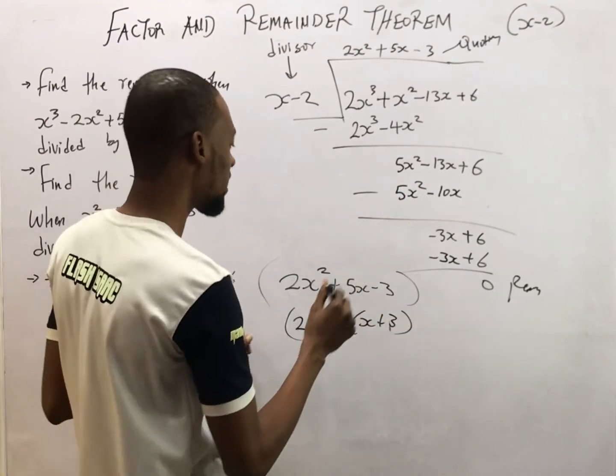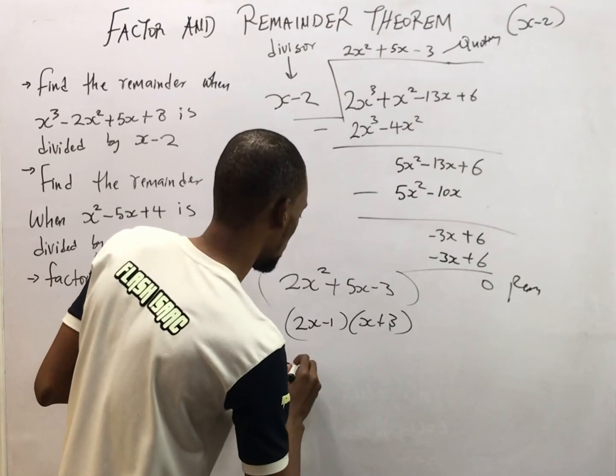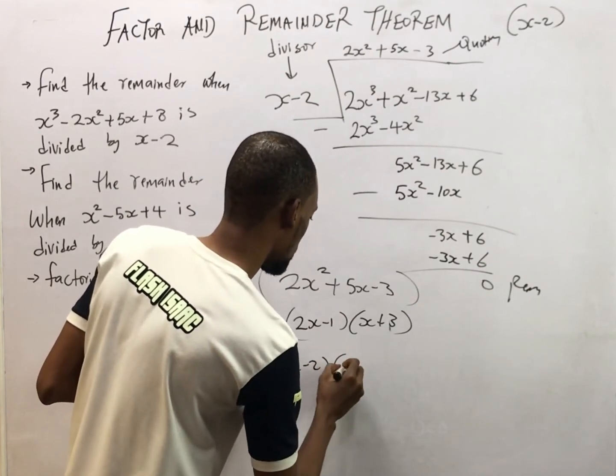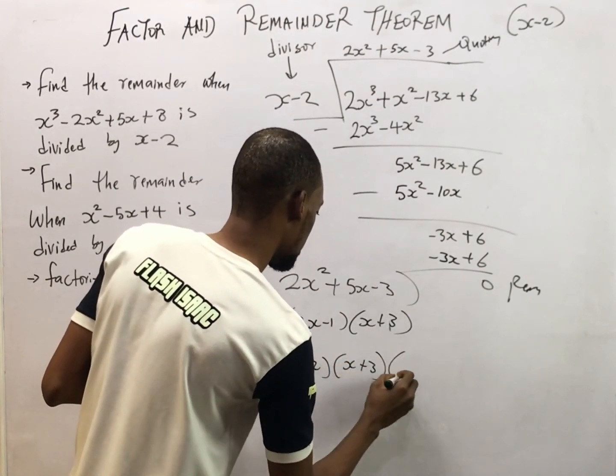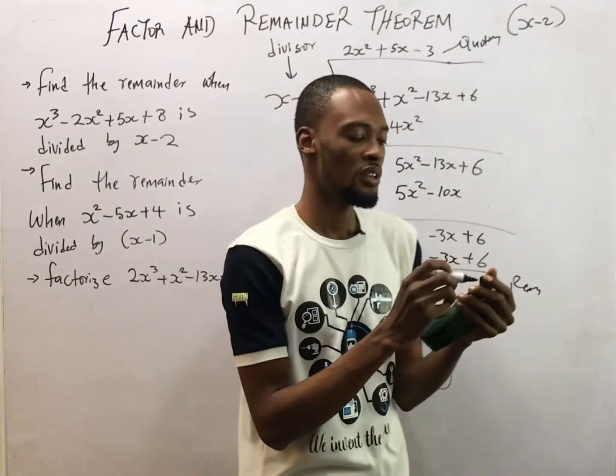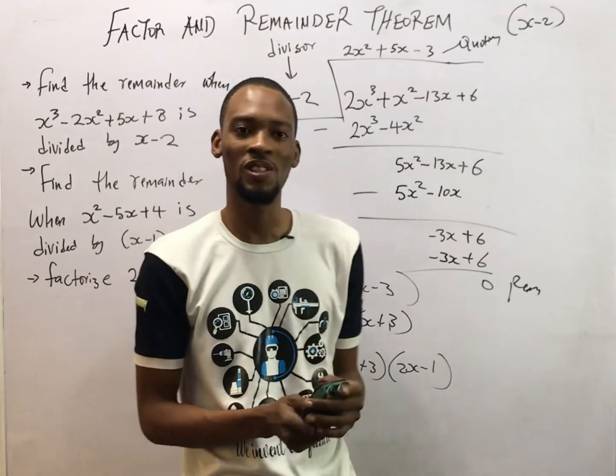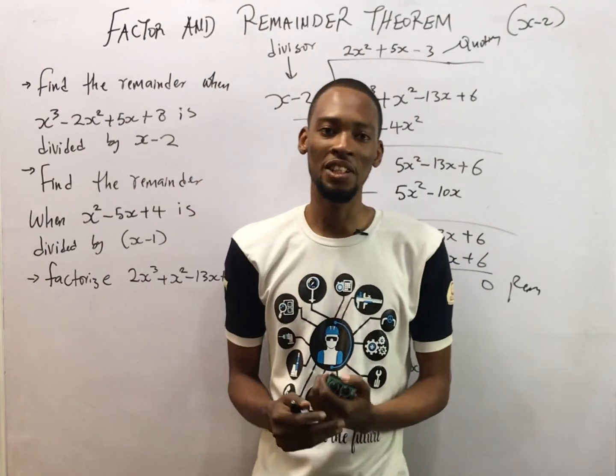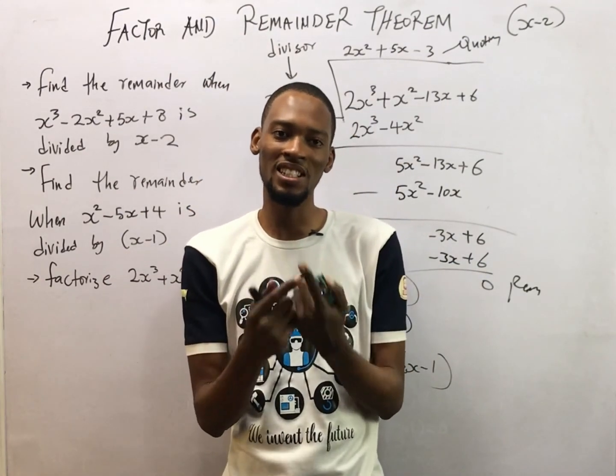So this implies that the factors are S minus 2, S plus 3, and 2S minus 1. So that's how factor and remainder theory in polynomial goes. Thanks for watching. And don't forget to subscribe to this channel for more amazing videos.